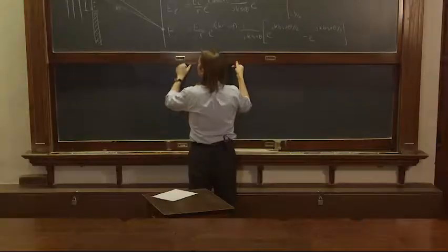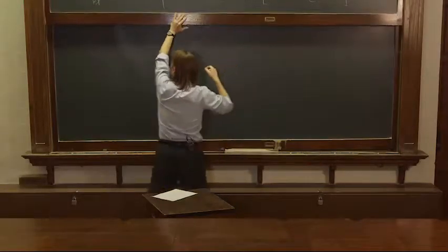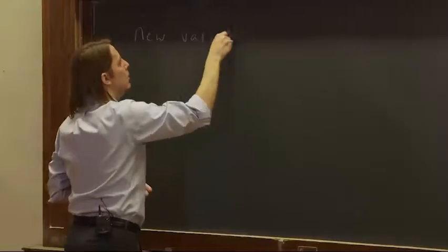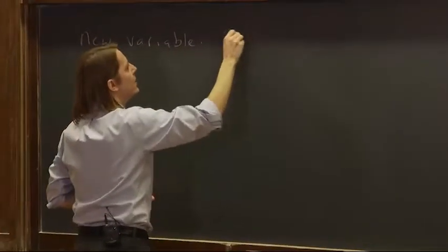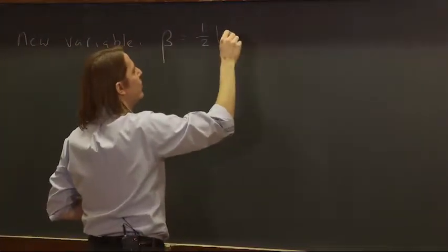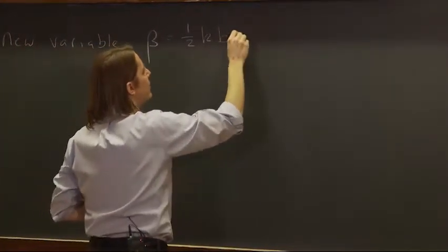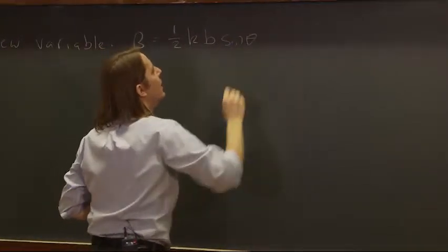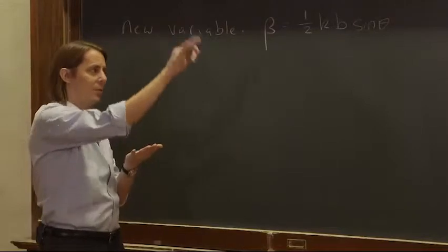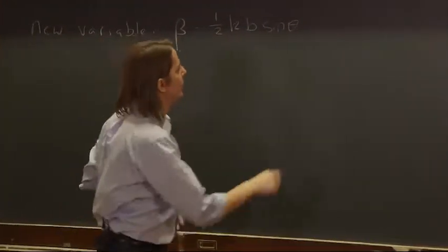They all go together all the time, so what we're going to do is rewrite this with a new variable, beta, and make beta equal to 1/2 K, 2π over the wavelength, B the width of the slit, sine theta. For now sine theta really is the position on the screen. That's the angle at which the light is going to go. It tells you where you end up on the screen.